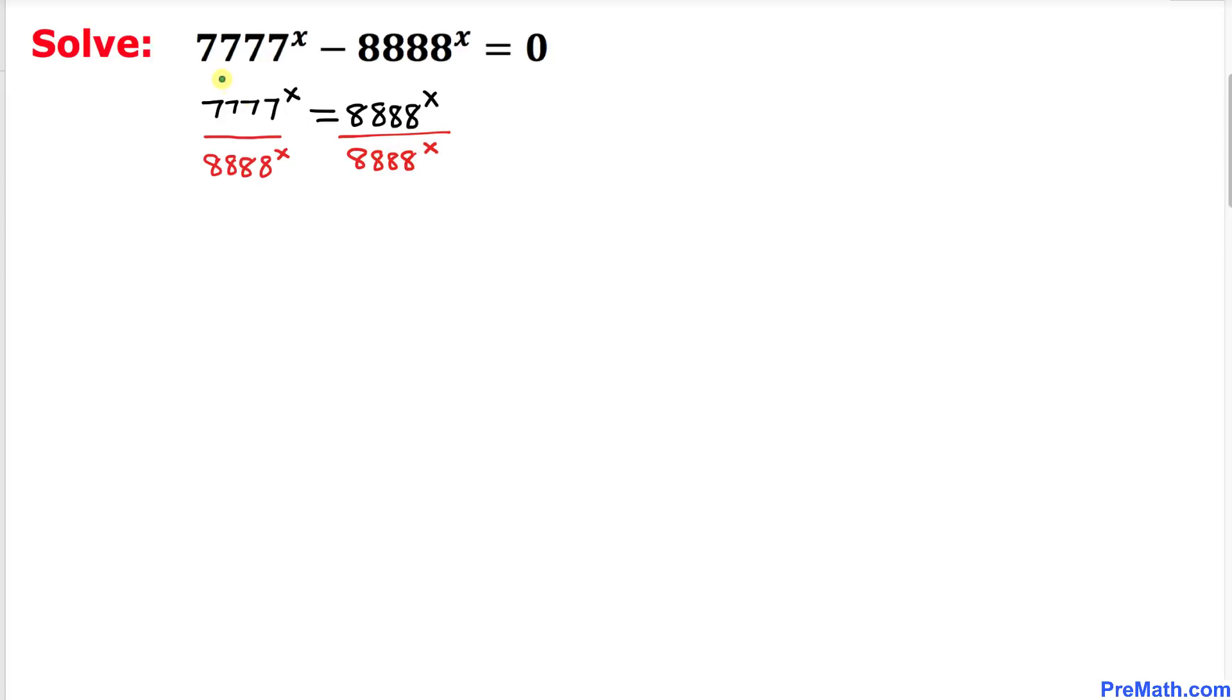Now let's focus on this left hand side fraction. As we can see, the exponents on the numerator and the denominator are the same: x. So therefore we can write this fraction as 7777 divided by 8888, whole power x.